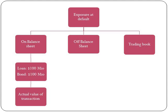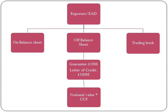To conclude, EAD for on balance sheet items is calculated on the basis of the actual value of the transaction, and apart from the principal amount we will include accrued interest in EAD. Now let's move on to off balance sheet items, which would include overdraft facilities, guarantees, letters of credit, or any other type of commitment. Off balance sheet items are anticipatory items which depend on future events and have not yet been paid or finalized by the bank.